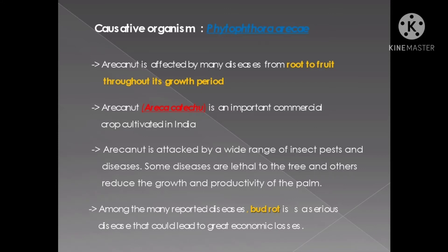Arecanut is an important commercial crop cultivated in India, but it is affected by many diseases from root to fruit throughout its growth period. Arecanut is attacked by a wide range of insect pests and diseases, but some of these diseases are lethal to the tree and others severely reduce the growth and productivity of the plant.